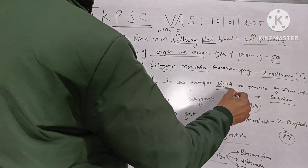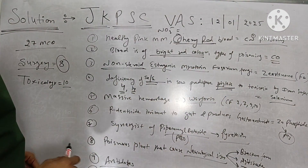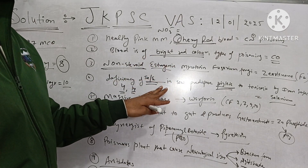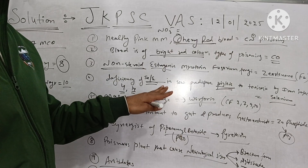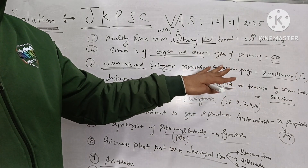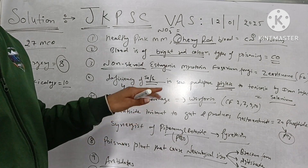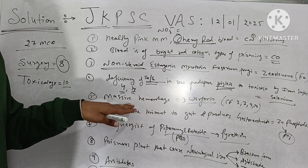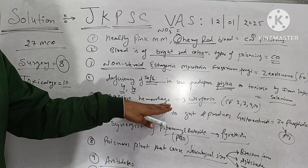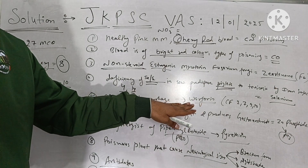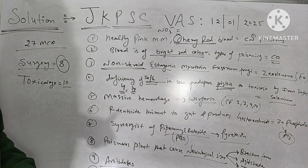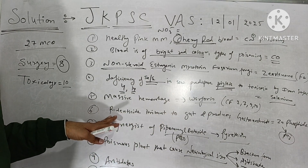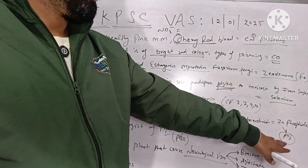If the nursing mother is deficient in selenium or vitamin E, the piglet becomes more susceptible to the toxicity of iron injection because the iron-metabolizing enzyme is not functioning properly. Warfarin causes massive hemorrhage because it binds with clotting factors 2, 7, 9, and 10. Zinc phosphide is a rodenticide irritant to the gut that causes gastroenteritis as it releases phosphine gas.